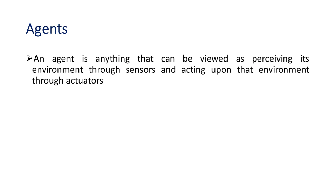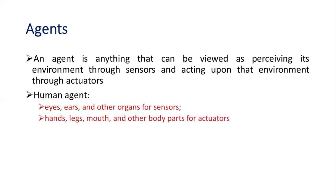I can do something to stop the fire or run away from it. That is called an agent. An agent has sensors — for a human being, our sense organs like eyes, ears, and other organs sense the environment. Based on the scenario we perform some actions, and those actions are carried out by actuators like hands, legs, and mouth. This as a whole we call an agent, and what we do in artificial intelligence is to copy this human intelligence into machines.